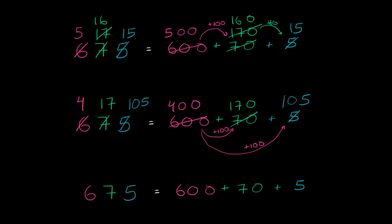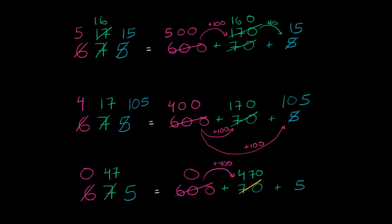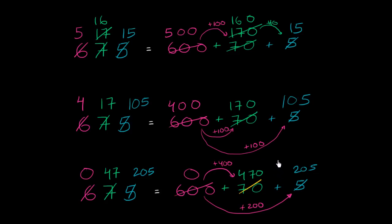Let's try one more — let's take all of the hundreds away, so the hundreds place goes to 0. Let's give 400 to the tens place, making that 470, which is 47 tens. And I still have 200 to give to the ones place, so that goes from 5 to 205. All I've done is regroup the value in the number 675. Any of these representations still equal 675 — you can add the numbers on the right and they all add up to 675.